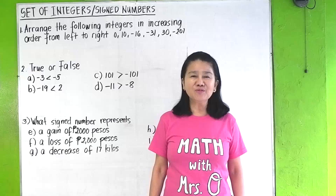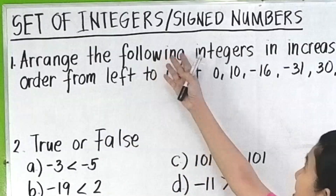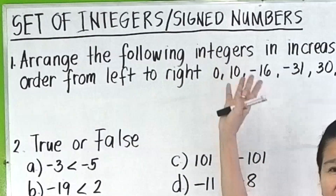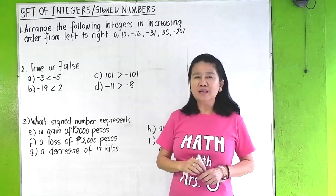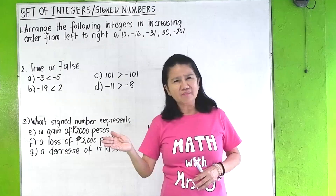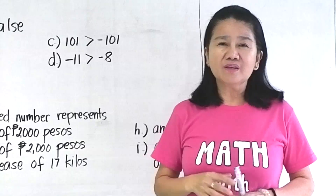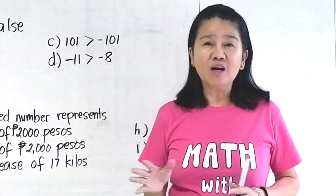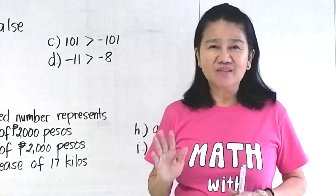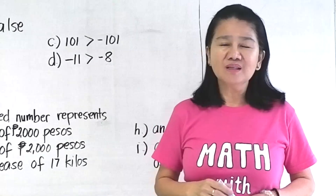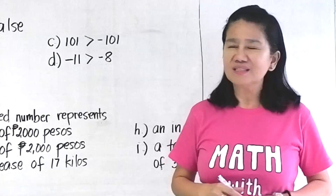Our lesson for today is the set of integers, or signed numbers. You learned from grade school — maybe grade one to grade four — that there are only positive numbers. But this time, you will learn that there are also negative numbers.